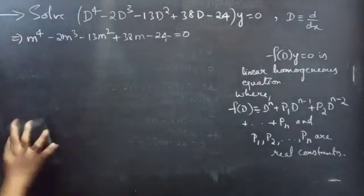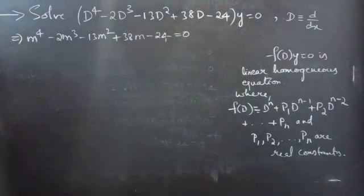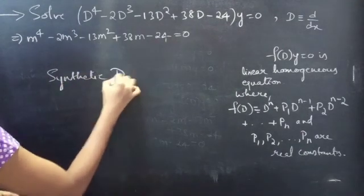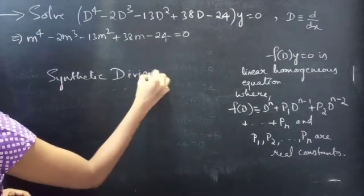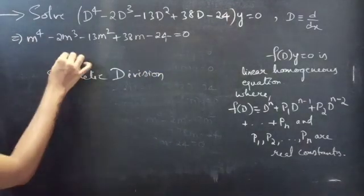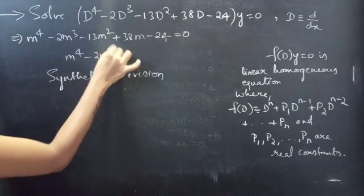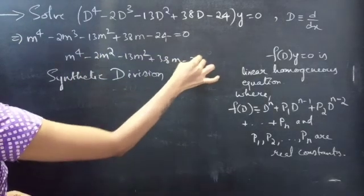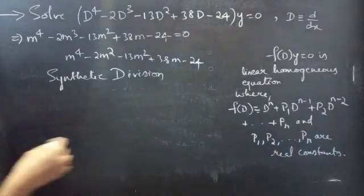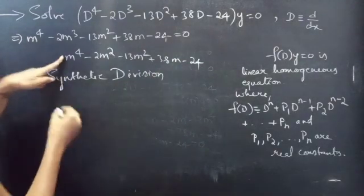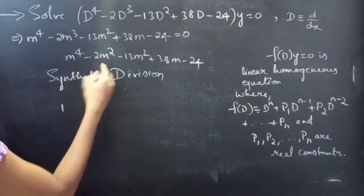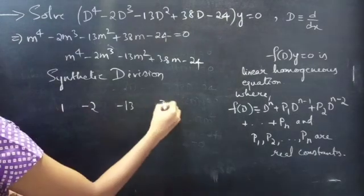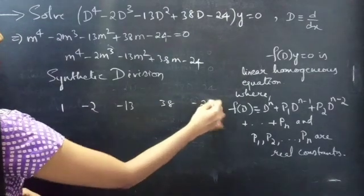Here we are going to use the synthetic division method to find factors of the polynomial. We write the coefficients: 1, -2, -13, 38, -24.